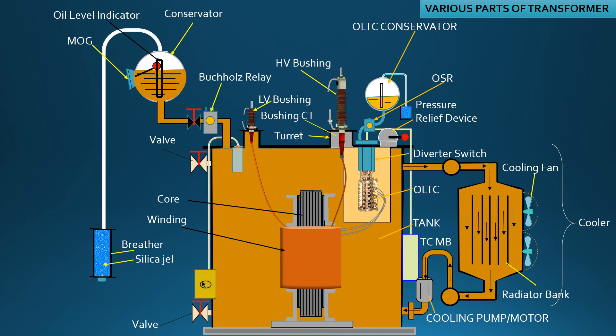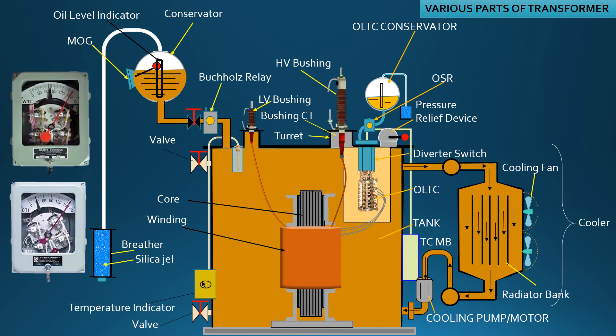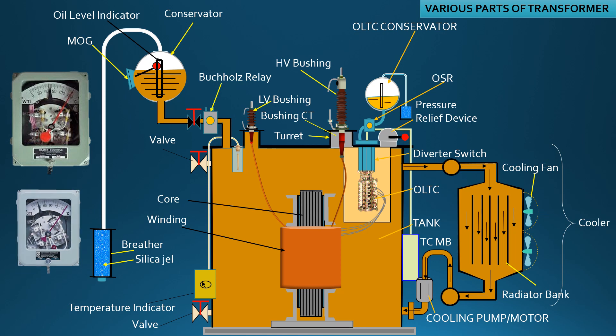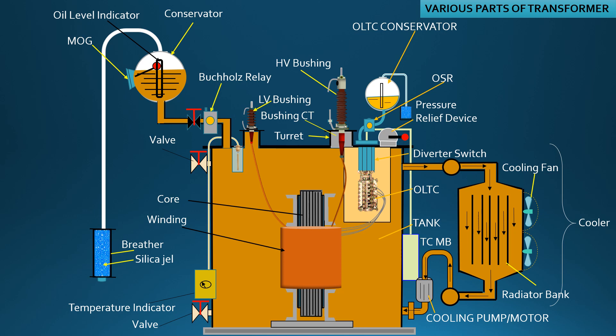Every power transformer is incorporated with winding temperature indicator and oil temperature indicator, WTI and OTI. The sensor bulb of the indicator is kept at the pocket where hot oil circulation is going on and near the winding.